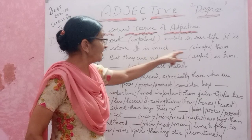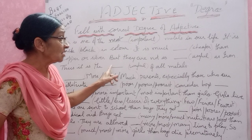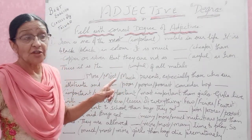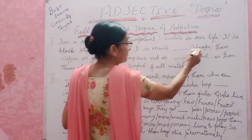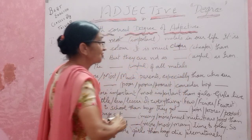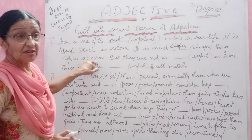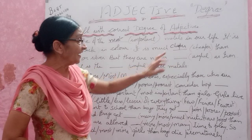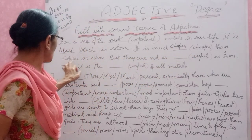Next: it is much cheap than copper or silver. Now the word given is 'cheap' and there is a comparison, so we will put the comparative degree — 'cheaper'. It is much cheaper than copper or silver. We compare iron with copper and silver, so we use 'cheaper'.